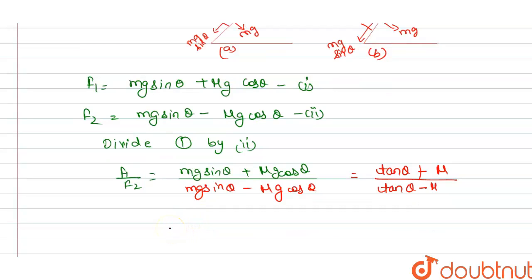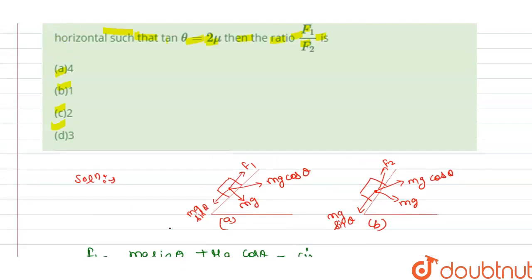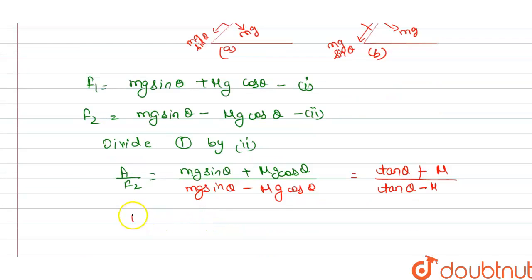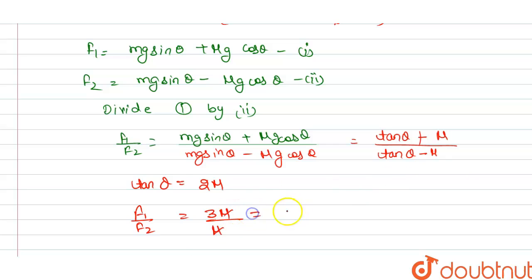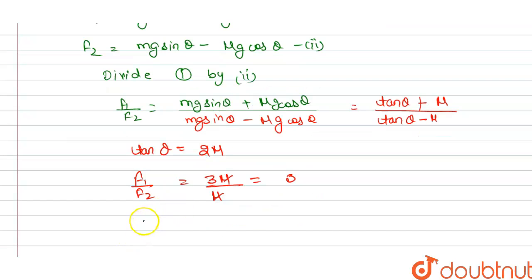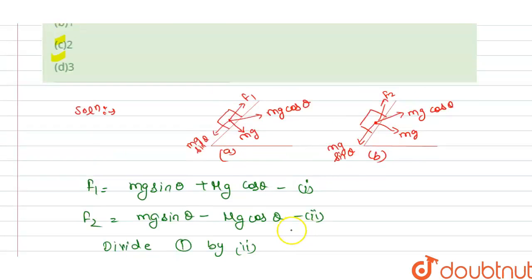Since tan θ = 2μ is given, we substitute: f1/f2 = (2μ + μ) / (2μ − μ) = 3μ / μ = 3. So the ratio f1 to f2 is 3.